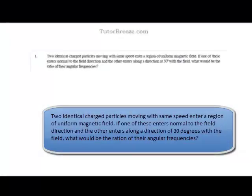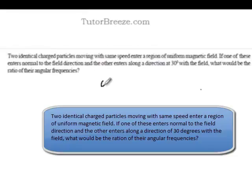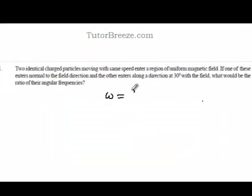The angular frequency of charged particles that enter the magnetic field is given by omega equals qB over m, which means their angular frequency depends on the magnetic field and the charge to mass ratio.